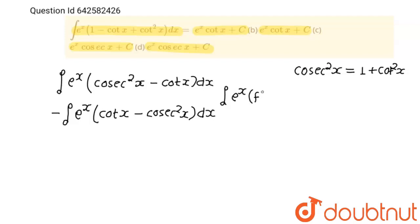E to the power x into f of x plus f dash x dx is equals to e to the power x f of x plus c.